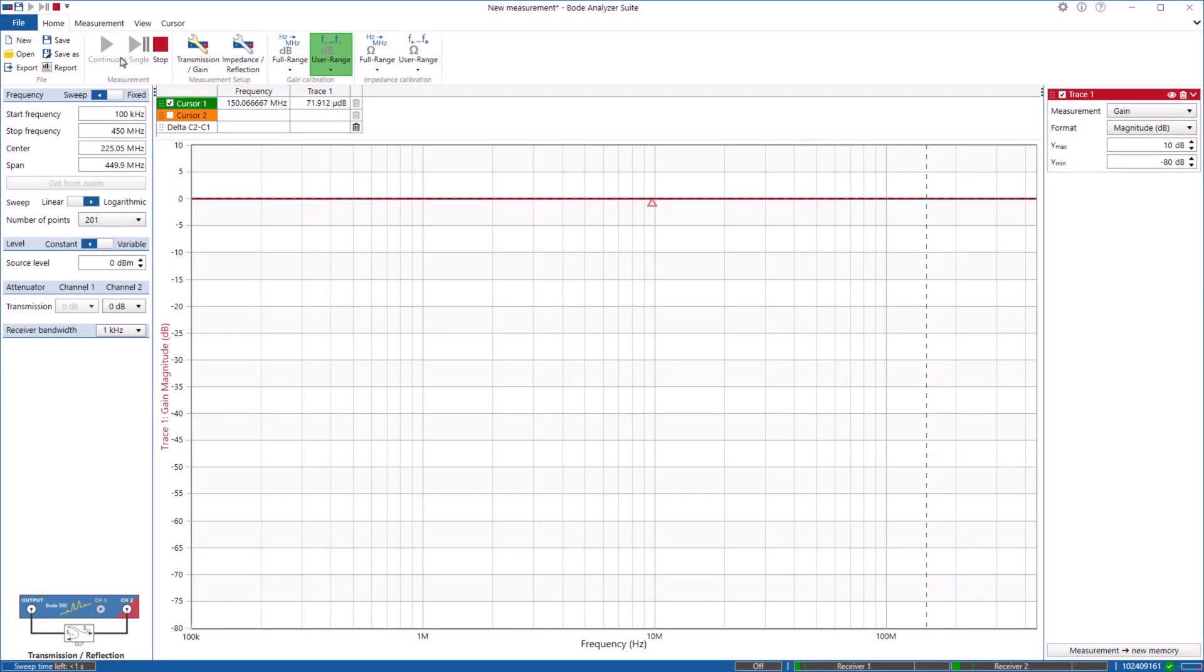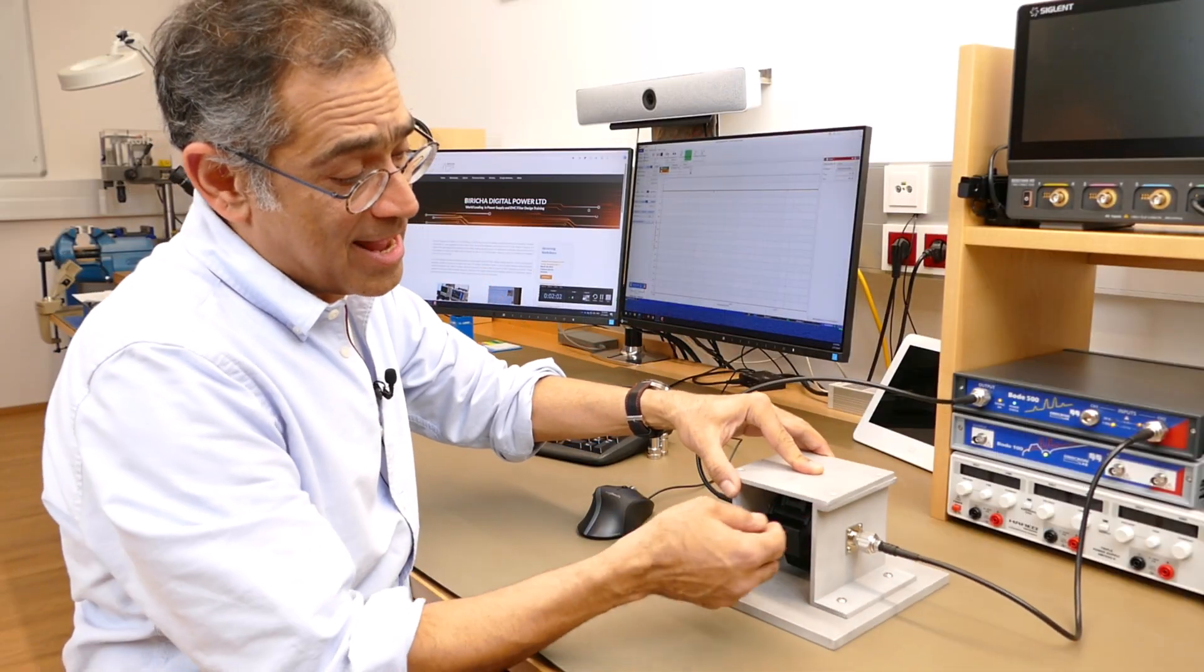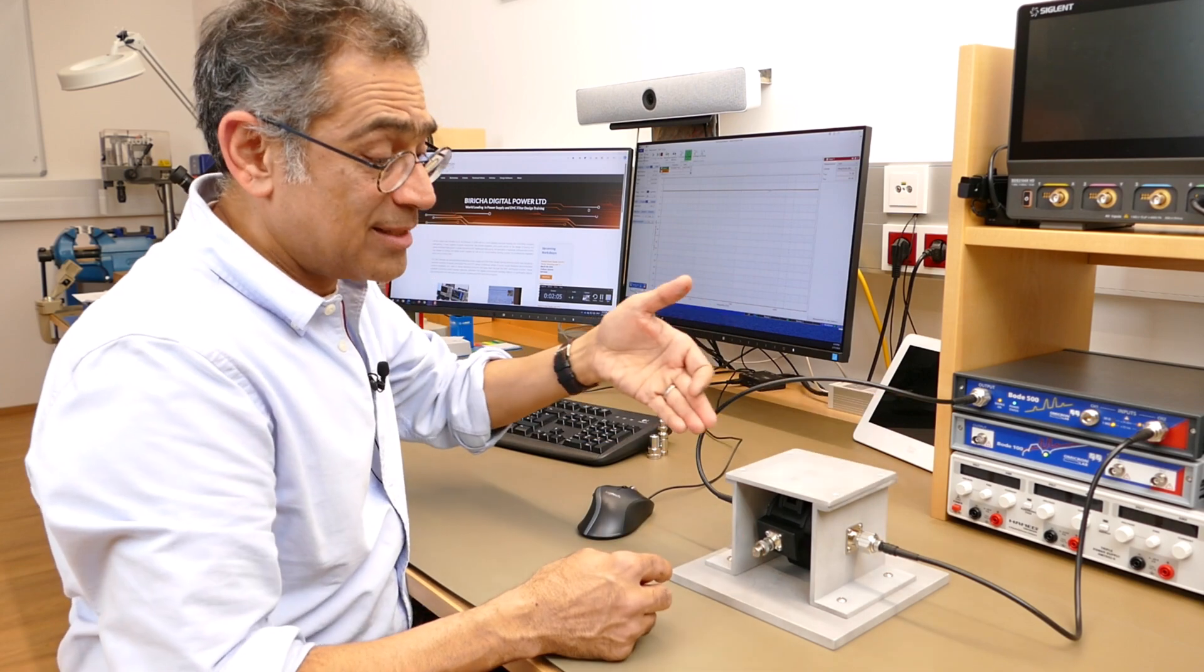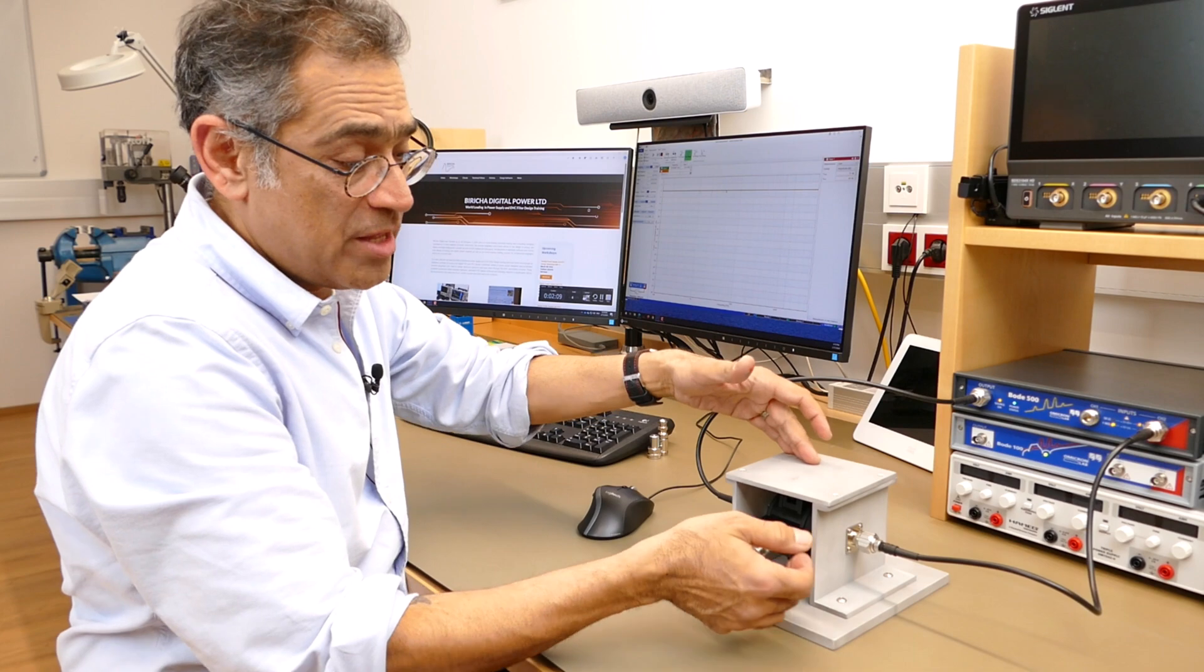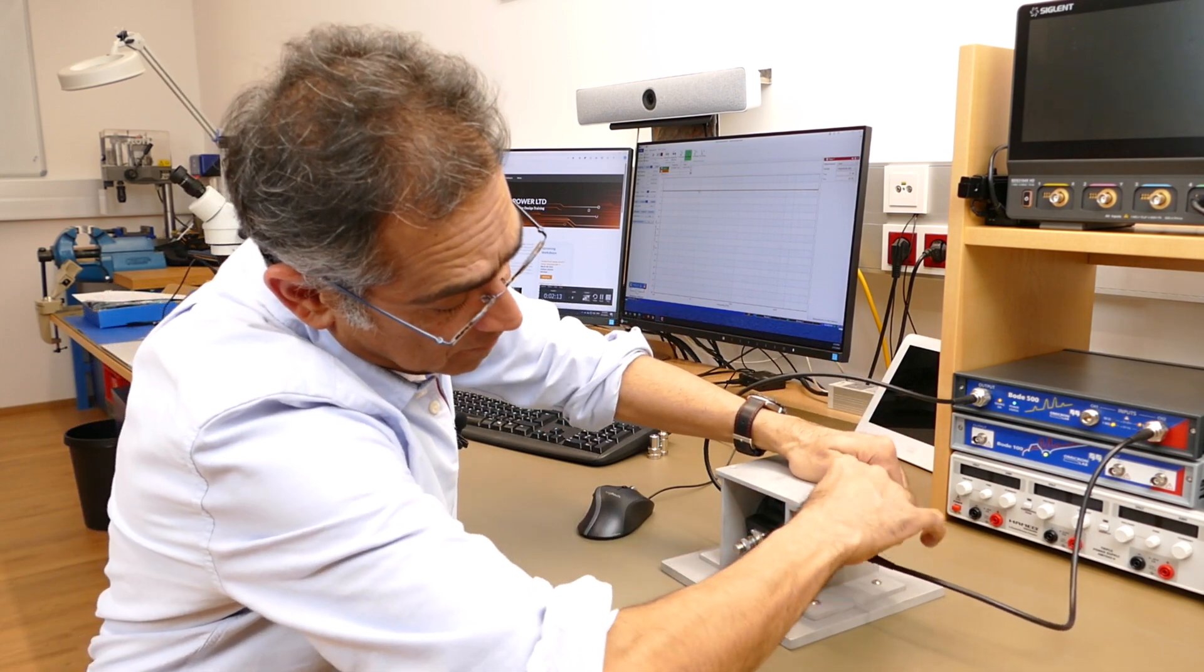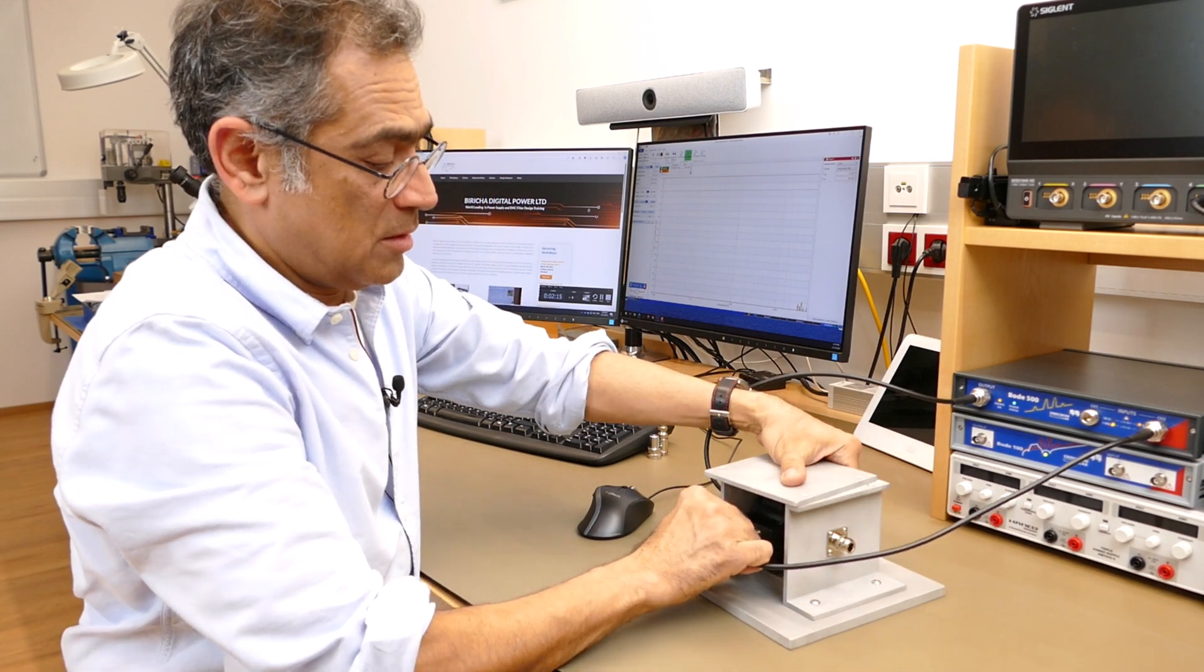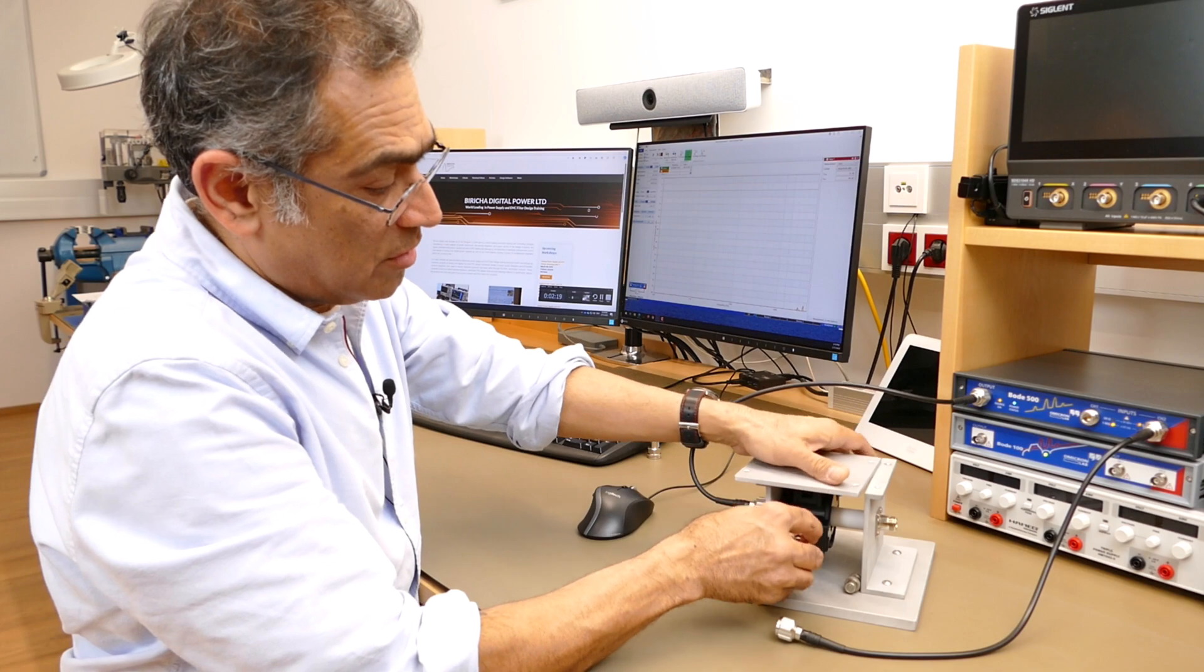So now what I can do is I can swap these two around, inject a signal and see what is being measured off the actual clamp. So let me take this off - this goes to the output of the current clamp.